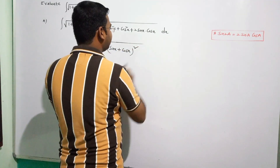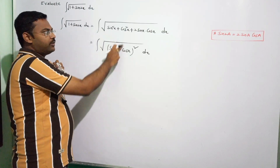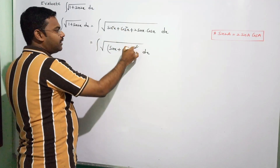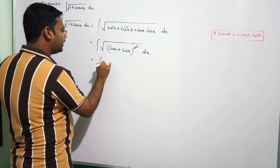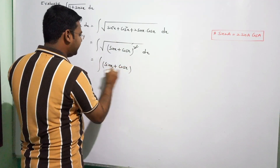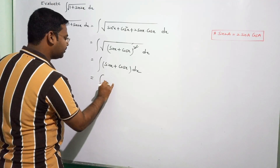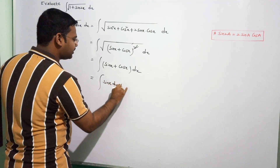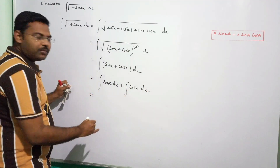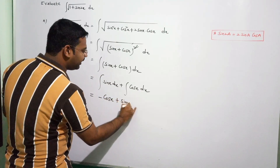Expanding: a² = sin²x, b² = cos²x, and 2ab = 2sinx·cosx. The square root cancels with the square, giving integral of (sinx + cosx) dx. Now split into integral sinx dx plus integral cosx dx.